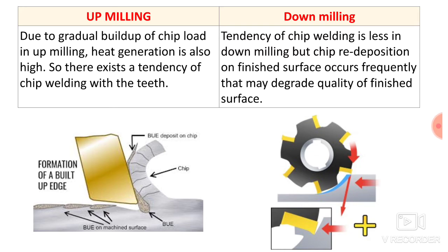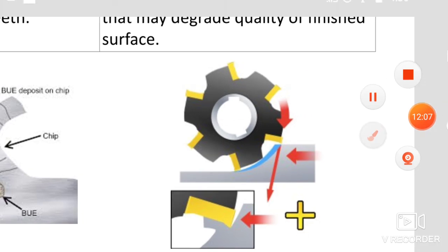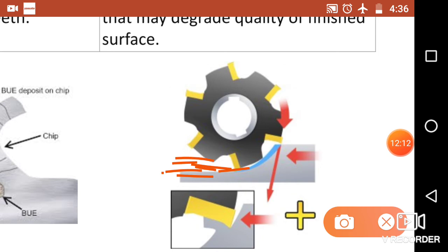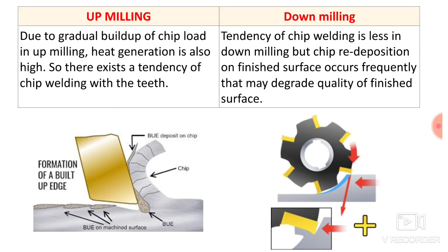In down milling, the tendency of chip welding is less. However, chip redeposition on the finished surface occurs frequently and may degrade the quality of the finished surface. The chips thrown away during machining get deposited over the machined surface. So both processes have disadvantages: in up milling it is built-up edge formation due to heat generation, whereas in down milling chips may get redeposited on the machined surface, degrading its quality.